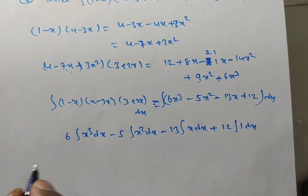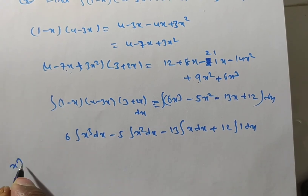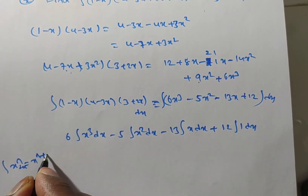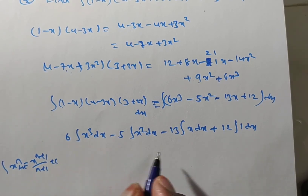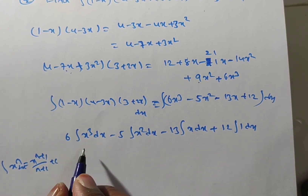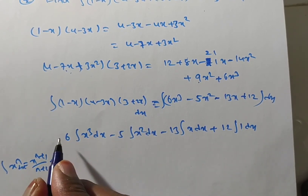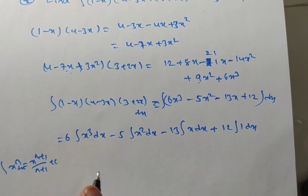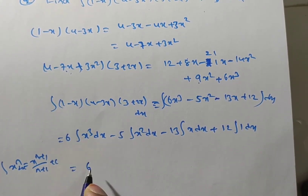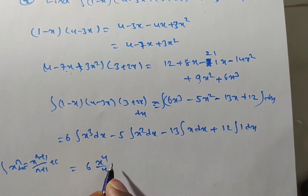Now applying the standard form — integral x power n dx equals x power n plus 1 divided by n plus 1 plus c — to each term. There are 4 integrations but we write a single arbitrary constant c at the end instead of c1, c2, c3, c4. So: 6 times x to the power of 4 divided by 4.